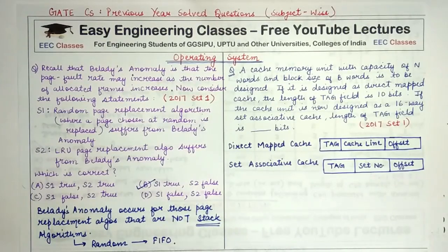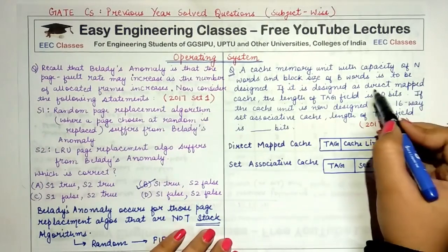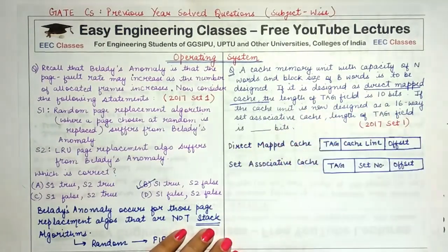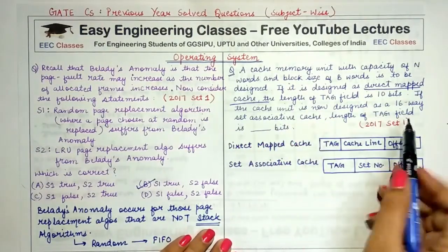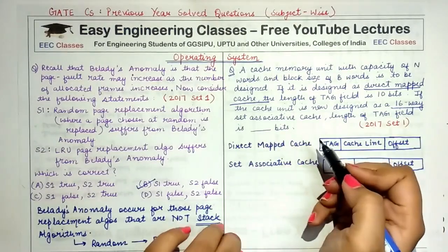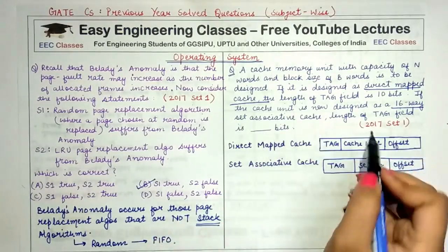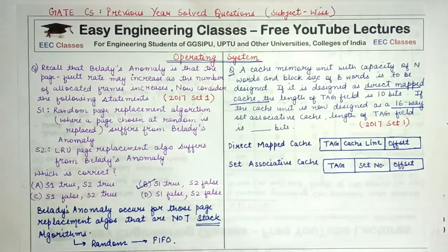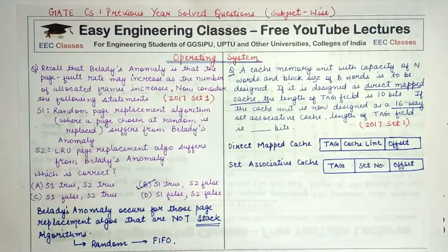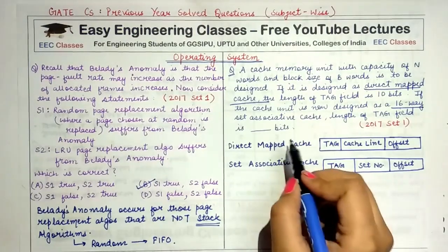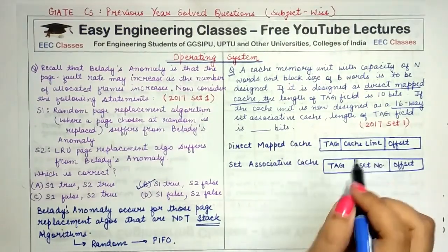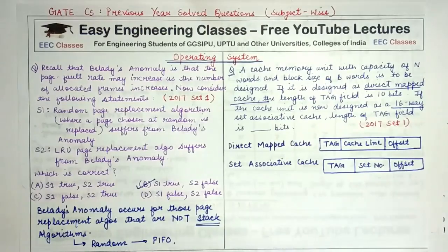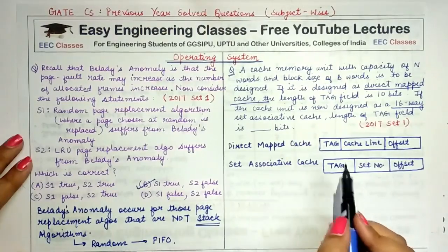Moving to the next question. A cache memory unit with capacity of N words and block size of B words is to be designed. If designed as a direct mapped cache, the length of the tag field is 10 bits. If designed as a 16-way set associative cache, the length of the tag field is what? This question is from Set 1 of the 2017 GATE paper and has no options — you must find the answer.